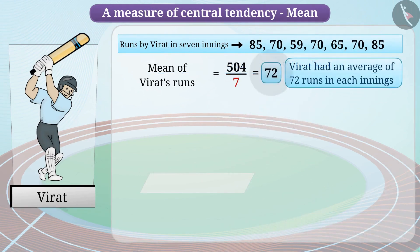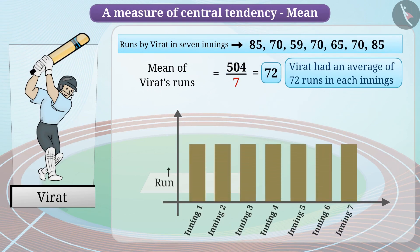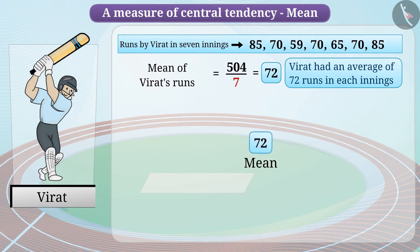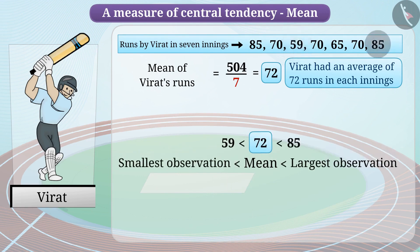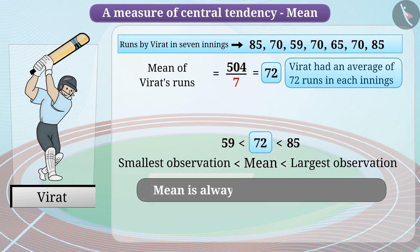The mean tells us that if Virat had scored equal runs in each innings, he would have scored 72 runs in each innings. We see that 72 is located between the smallest observation 59 and the largest observation 85. It can be generalized that mean is always a number between the smallest and largest observation, indicating that mean is always within the data range.